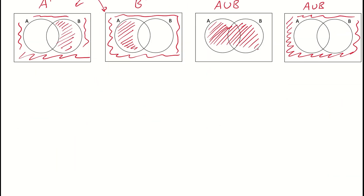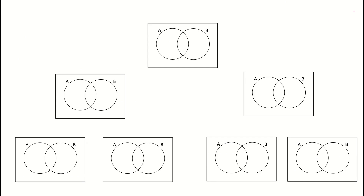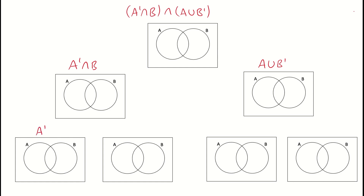Now we'll look at one more example, which is a bit harder. Here I want to look at what A prime intersecting B, intersected with A union B prime looks like. We'll break this down: first we'll find what A prime intersect B is, and on the right we'll find what A union B prime is. To break it down even further, we'll look at what A prime looks like, what B looks like, what A looks like, and what B prime looks like — starting from the bottom and working our way up.